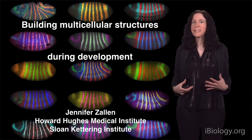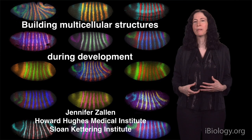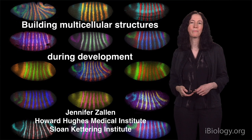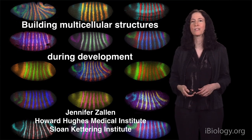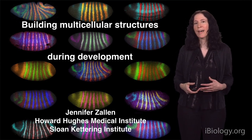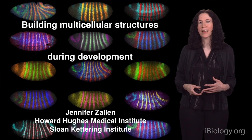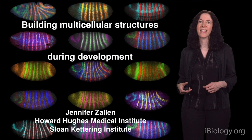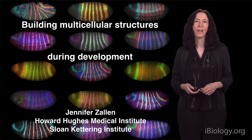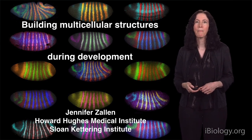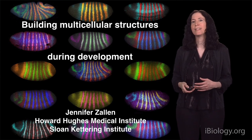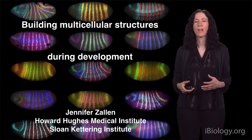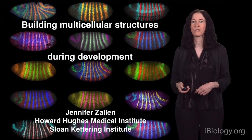Each one of us is a multicellular animal that contains billions of cells, each with their own intrinsic properties, and these cells have to work together to build the characteristic shapes and features of different animals. Our bodies contain many different kinds of cells, and these cells often have to move some distance from where they're born to where they need to end up in order to carry out their functions. In my lab we're interested in understanding how cells get where they need to go during development, and how many cells work together to build functional three-dimensional structures.